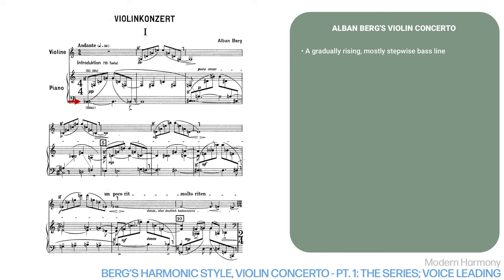Measures 1 to 9 are built over a gradually rising, mostly stepwise bass line, until it peaks on B-flat in measure 9. As it does in tonal music, this gives a clear direction to the harmony. The main line above that starts with an arpeggio of perfect fifths in the clarinet and harp, answered by the open strings of the violin. These arpeggios go gradually higher, peaking at the same time as the bass line in measure 8.